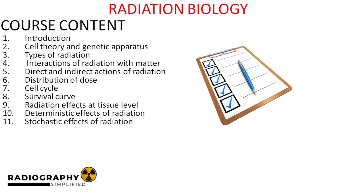From section 3 to 5, we'd explore the types of radiation, the interactions of radiation with matter, and the actions of radiation on living cells. In section 6, we'll talk about certain terms that are associated with the distribution of dose. Then in section 7, we'll return to high school biology where we talk about the cell cycle and how it relates to radiation biology. Section 8 covers a concept called the survival curve, and section 9 talks about the effects of radiation at tissue level. In the last two sections, we discuss the deterministic and stochastic effects of radiation.